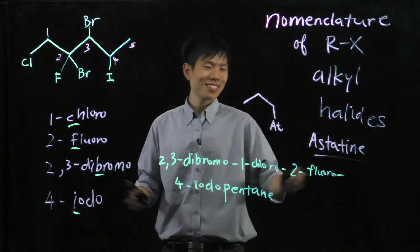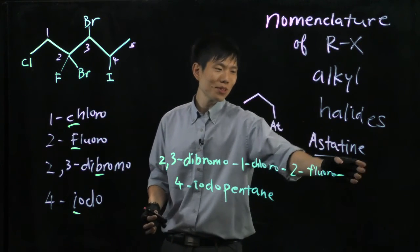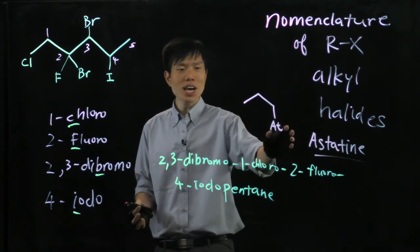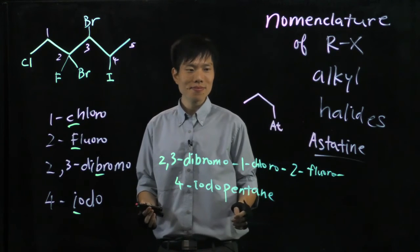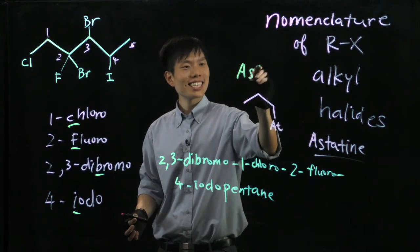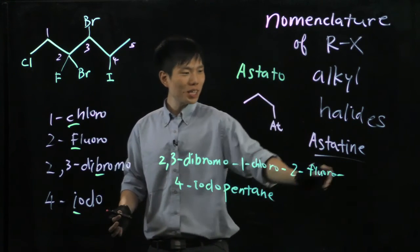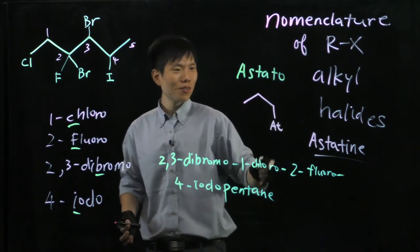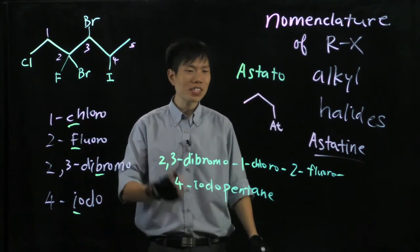They have the same suffix. So how do we change it to an adjective? You got it? It's astato. Right? We drop the -ine, insert the -o, we get the adjective in terms of the naming.